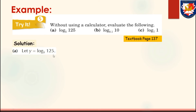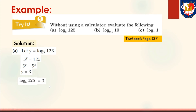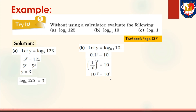Part A: let y equal the logarithm of 125 to the base of 5. Based on the definition, convert to exponent form: 5 to the power of y equals 125. Since 125 is 5 to the power of 3, y equals 3, so the logarithm of 125 to the base of 5 equals 3. Part B: let y equal the logarithm of 10 to the base of 0.1. So 0.1 to the power of y equals 10, which gives 10 to the power of negative y equals 10 to the power of 1, so y equals negative 1. Therefore the logarithm of 10 to the base of 0.1 equals negative 1.